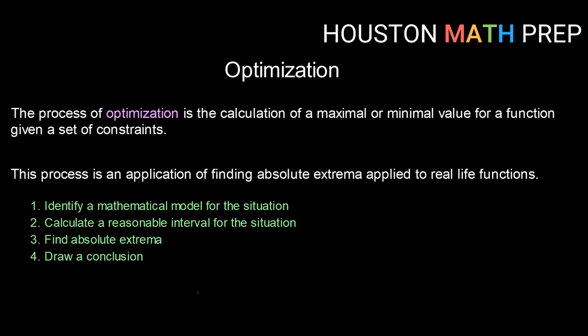So in general, we're going to go through four main steps. We're going to first identify a mathematical model for the situation. That can be anything from area and volume to a cost function, or in some cases even distance and rate of change, just depends on the situation. So we're going to identify that mathematical model.